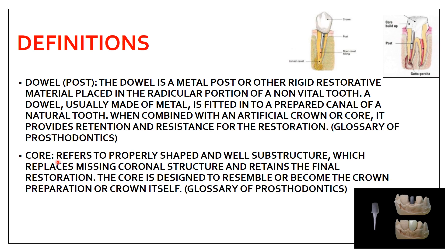Core refers to a properly shaped and well-built substructure which replaces the coronal structure and retains the final restoration. The post goes into the root canal, the core sits above it, and over this core you place the crown. The core is designed to resemble or become the crown preparation or crown itself. In some scenarios you may not even need to place a crown - the core itself acts as a crown - but mostly you prepare the core properly and then place a crown over it. This definition of core is also given by the Glossary of Prosthodontics.